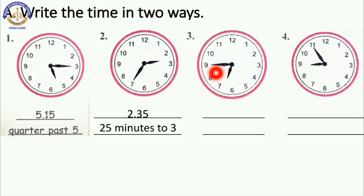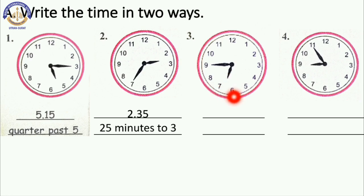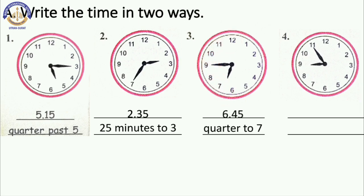Here the minute hand is on 9 and the hour hand is between 6 and 7. So the time is 6:45. In words we say quarter to 7. Write in your textbook 6:45 and in words quarter to 7.